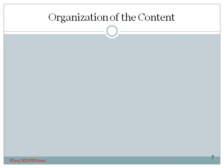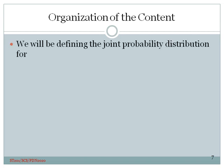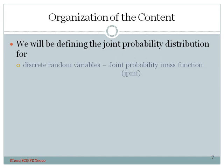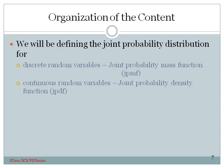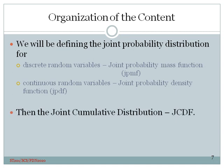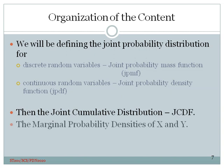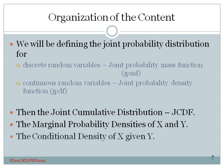Here is the organization of the content. We will first define the joint probability distribution for discrete random variables that is the joint probability mass function or JPMF. Then continuous random variables, joint probability density function JPDF. Then we will look at the joint cumulative distribution or JCDF, and also the marginal probability densities of x and y, and then finally the conditional density of x given y.